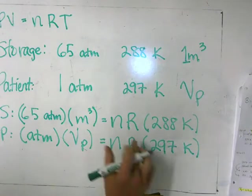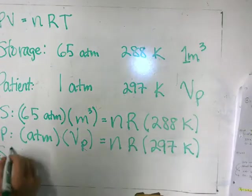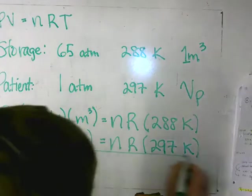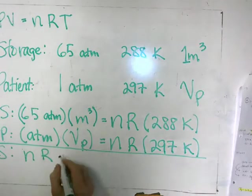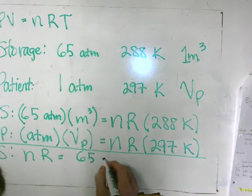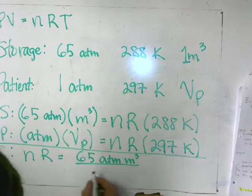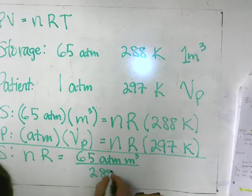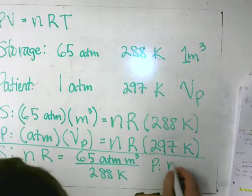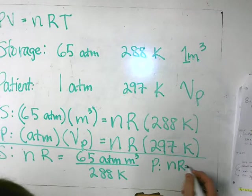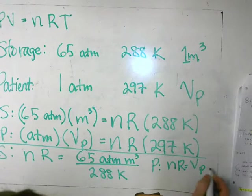For storage, NR equals 65 ATM times one cubic meter, all over 288 Kelvin. And for the patient, NR is equal to Vp times one ATM, all over 297 Kelvin.